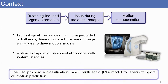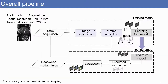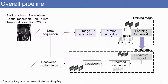In this work, we propose a classification-based multiscale model for spatiotemporal 2D motion prediction. This figure shows the overall pipeline. The proposed model receives a sequence of images and can predict the sequence of encoded motion corresponding to a few short time steps.